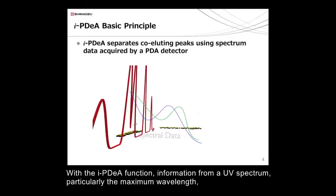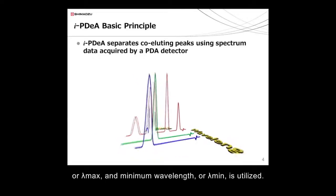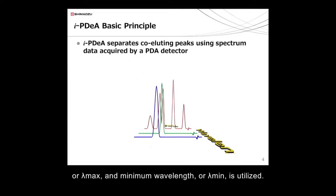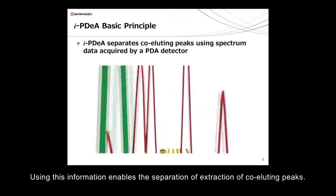With the IPDA function, information from a UV spectrum, particularly the maximum wavelength or lambda maximum, and minimum wavelength or lambda minimum, are utilized. Using this information enables the separation or extraction of coeluting peaks.